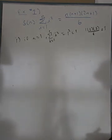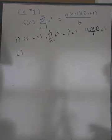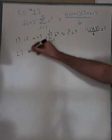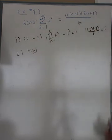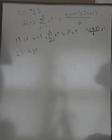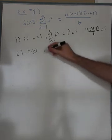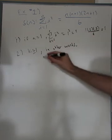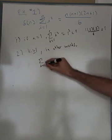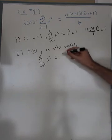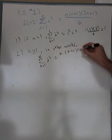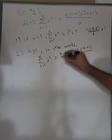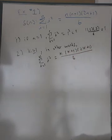Step two: we assume the result true for some fixed k greater than or equal to 1 — meaning if we can get up the first step, we assume we can get the rest of the steps. In other words, the summation from i equals 1 to k of i squared equals k times (k+1) times (2k+1) over 6. This is our induction hypothesis.